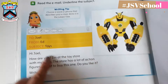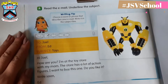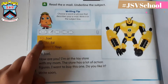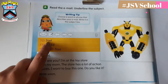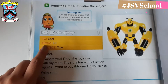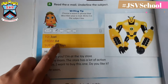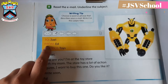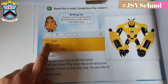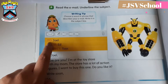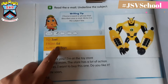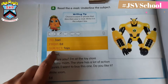The subject is what describes your e-mail — what is the overall subject, what is it about? For example, the e-mail will be sent to Joel, and the sender is from Ed. 'From' means who gave the letter, and 'to' is where you are going to send it. The letter will be sent to Joel, it is from Ed, and the subject is 'toys'.